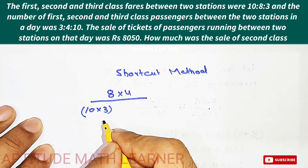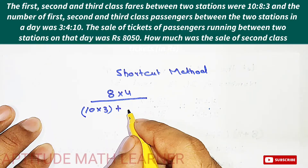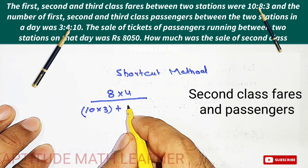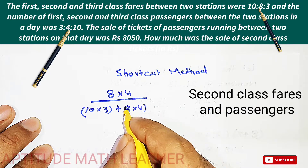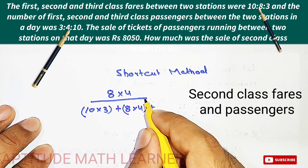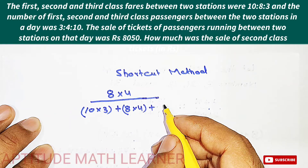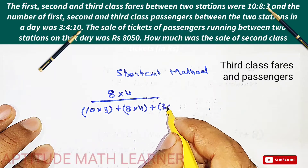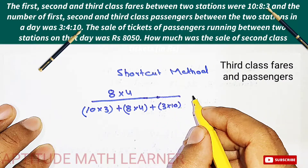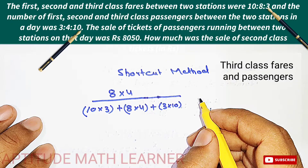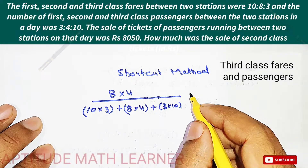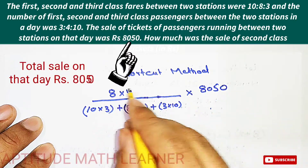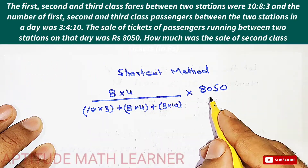We add all the products: for first class 10 × 3, plus for second class 8 × 4, plus for third class 3 × 10. The total revenue collected on that day was 8050 rupees, and we multiply the fraction by 8050.